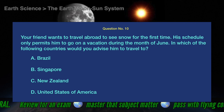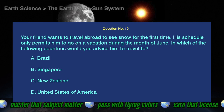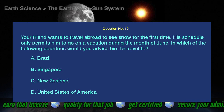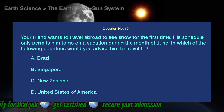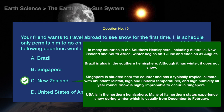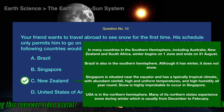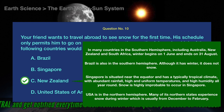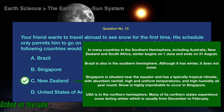Question number 10. Your friend wants to travel abroad to see snow for the first time. His schedule only permits him to go on a vacation during the month of June. In which of the following countries would you advise him to travel to? A. Brazil. B. Singapore. C. New Zealand. D. United States of America. The correct answer is C, New Zealand. In many countries in the Southern Hemisphere, including Australia, New Zealand, and South Africa, winter begins on June 1st. Brazil is also in the Southern Hemisphere, but although it has winter, it does not snow. Singapore is situated near the equator and has a tropical climate with abundant rainfall, high temperatures, and high humidity all year round, making snow highly improbable. The USA is in the Northern Hemisphere, and its northern states experience snow during winter, usually from December to February.